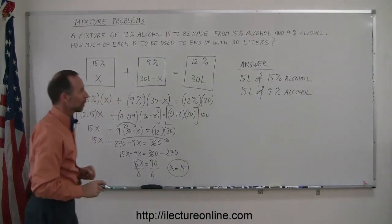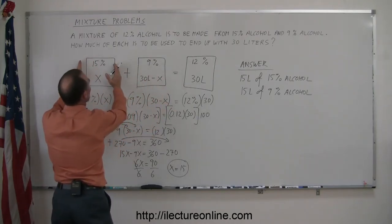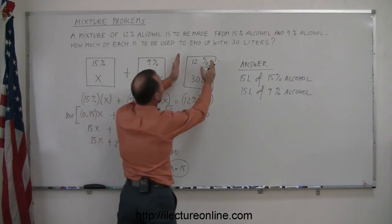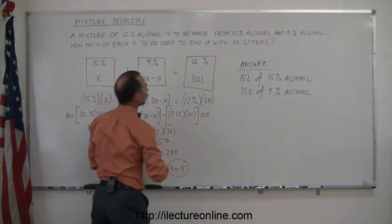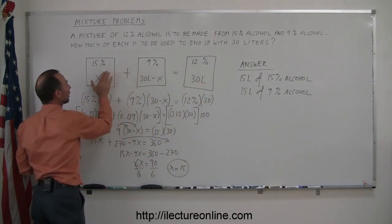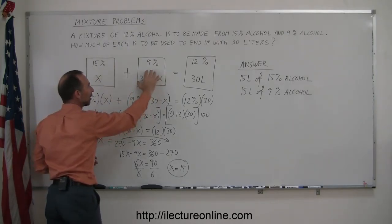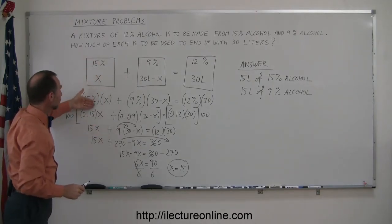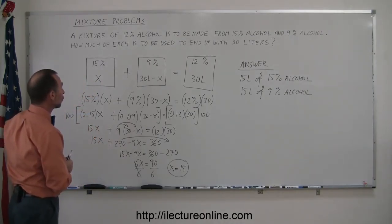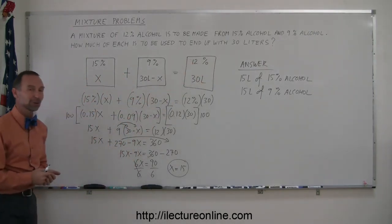And that's how you do these types of mixture problems. Notice that if you put it into a nice little graphical format, this represents the 15% alcohol solution, this represents a 9% alcohol solution, and this represents what you finally end up with, a 12% solution. You know that you're supposed to get 30 liters of that solution made up from however much you put in here. Let this be the unknown, x liters of this solution and the total 30 liters minus x of that solution, and then you multiply these two together. The multiplication of each of those represents the amount of alcohol you have in each of your solutions, and those two should add up to the total amount of alcohol you have in your final solution. And that's how you do the problem.